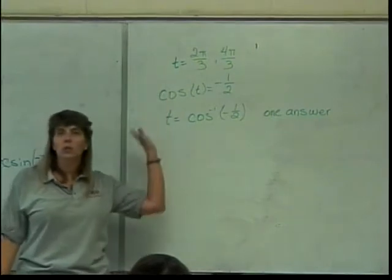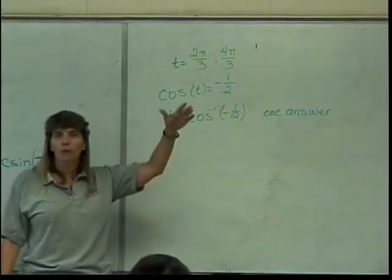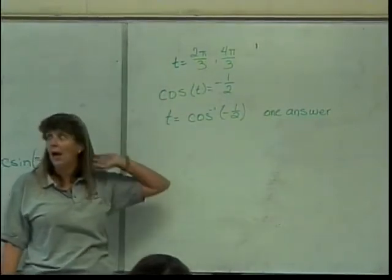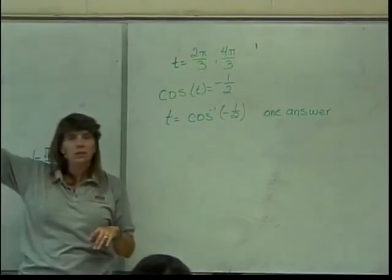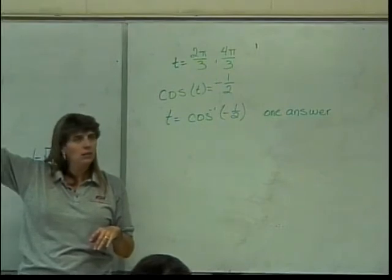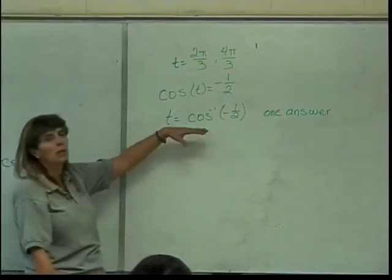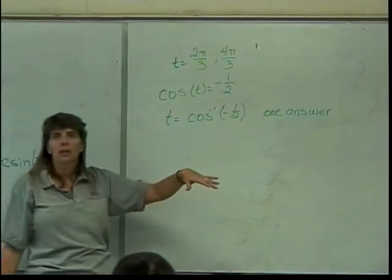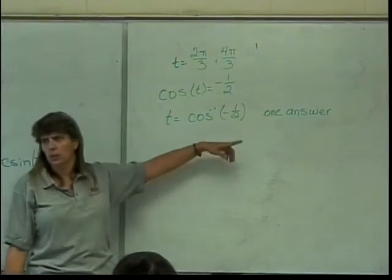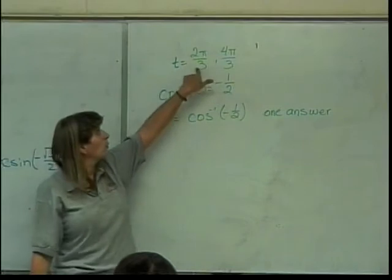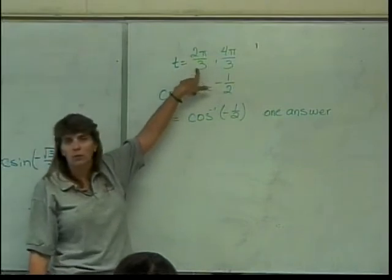Because it's in quadrant two, going from zero to pi, which is in the right direction and within the space that we want — that's one of my answers. Maybe you should actually know what that is. It's this one right here: two pi over three.